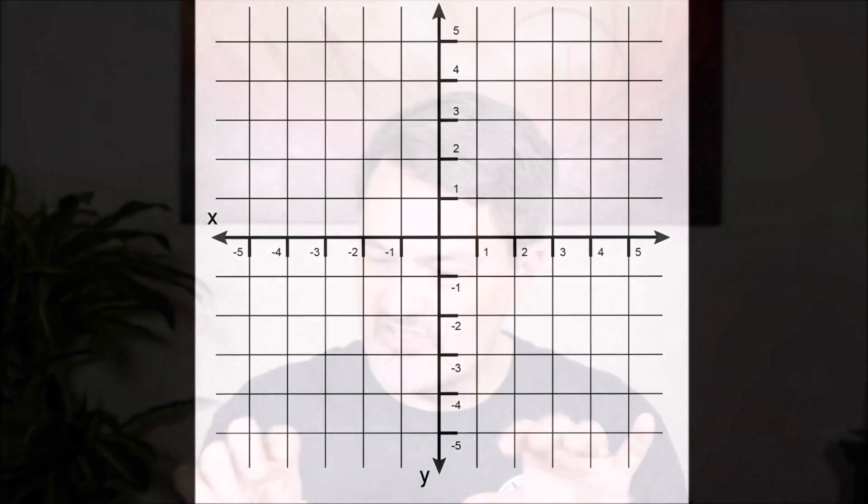When you get them all set up to the exact right color for each one, you have an image — whatever you want displayed on the screen. Whether it's text, a static image like a photograph, or video where it changes quickly. Each one of those little dots is called a pixel, P-I-X-E-L.